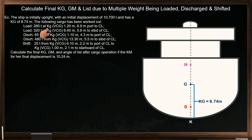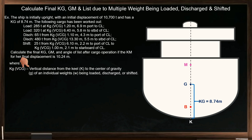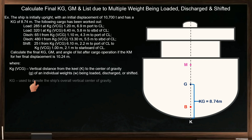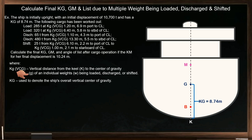The abbreviations 'kg' (with small letter g) and 'VCG' both represent the vertical distance from the keel to the center of gravity of the individual weights being loaded, discharged, or shifted. 'KG' where G is in capital letters denotes the ship's overall vertical center of gravity. Be aware that some textbooks use 'kg' in lowercase to represent the center of gravity of a specific weight, which can be confused with the ship's KG. It's important to distinguish between these abbreviations to avoid confusion.